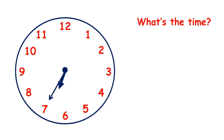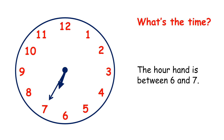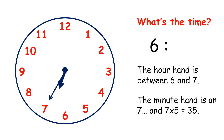Now pause the video and see if you can tell the time on this clock. Well, the hour hand is between 6 and 7, so it's 6 something. And the minute hand is on 7, and 7 times 5 is 35, so the time is 6:35.